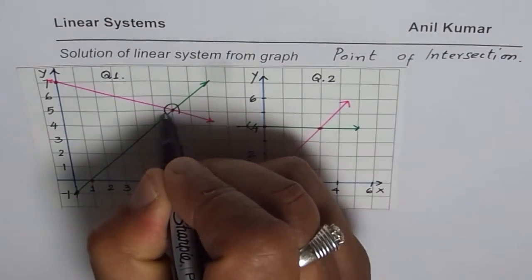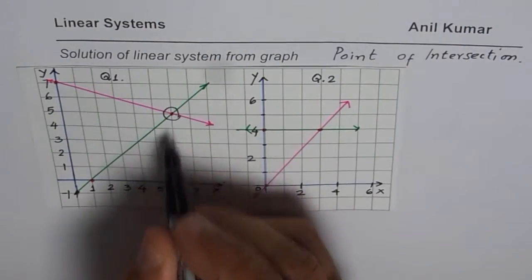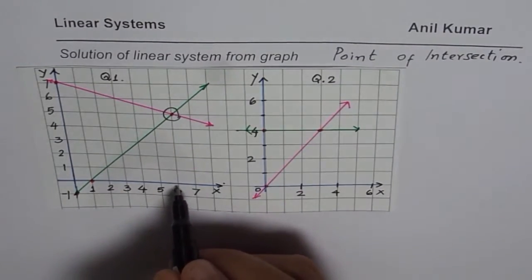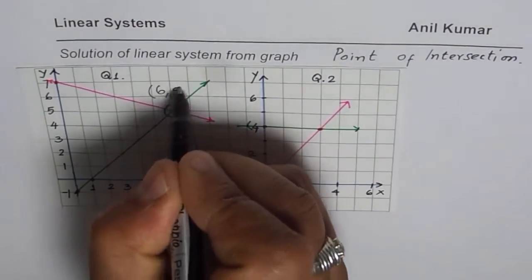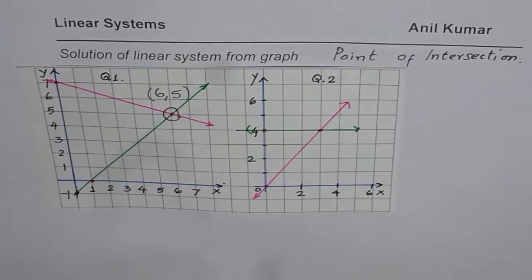So that gives you the solution. In the first case, this is the point of intersection which has coordinate of 6 and 5. So (6, 5) is the solution of the first question.